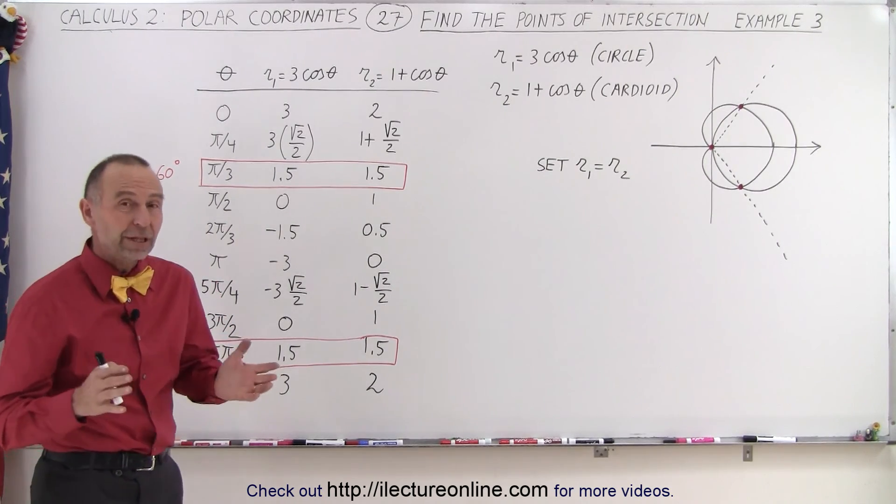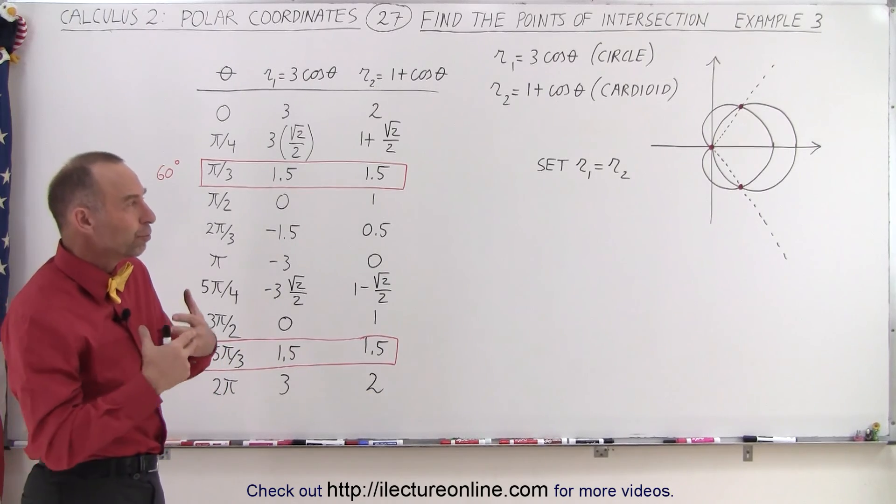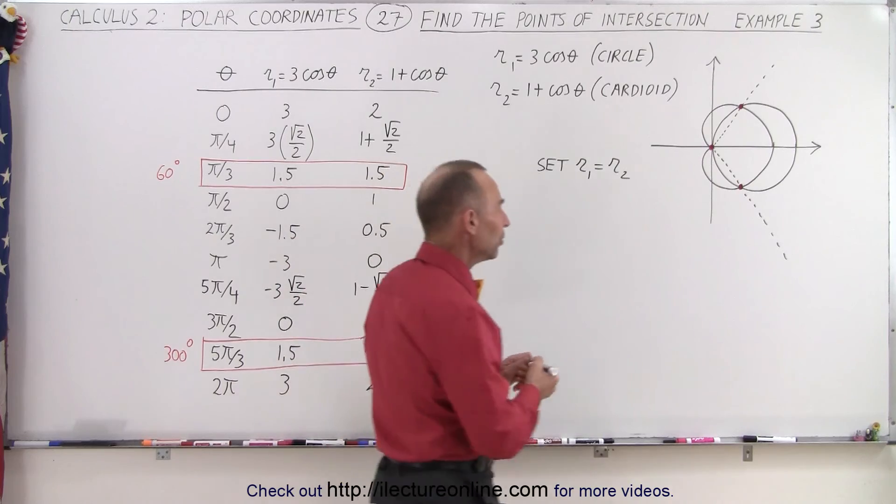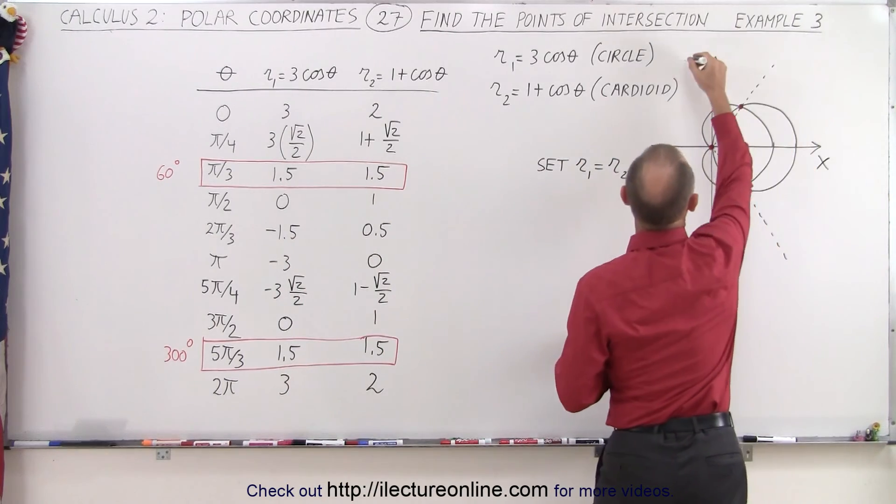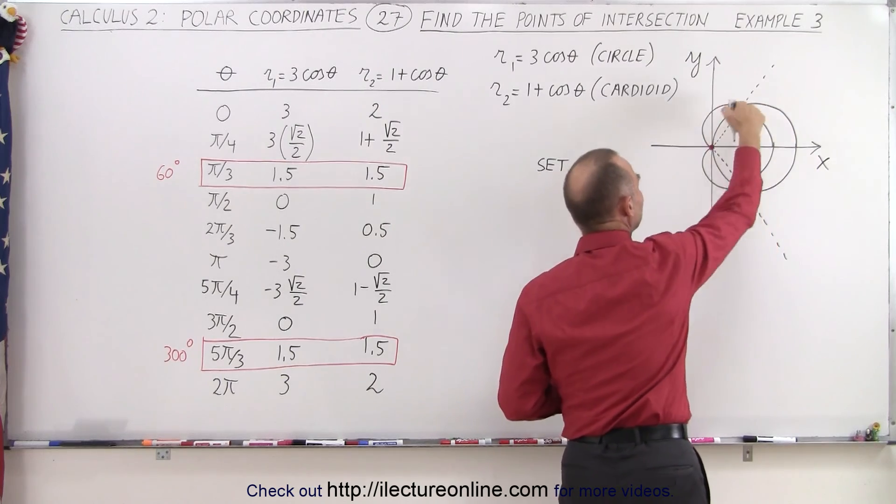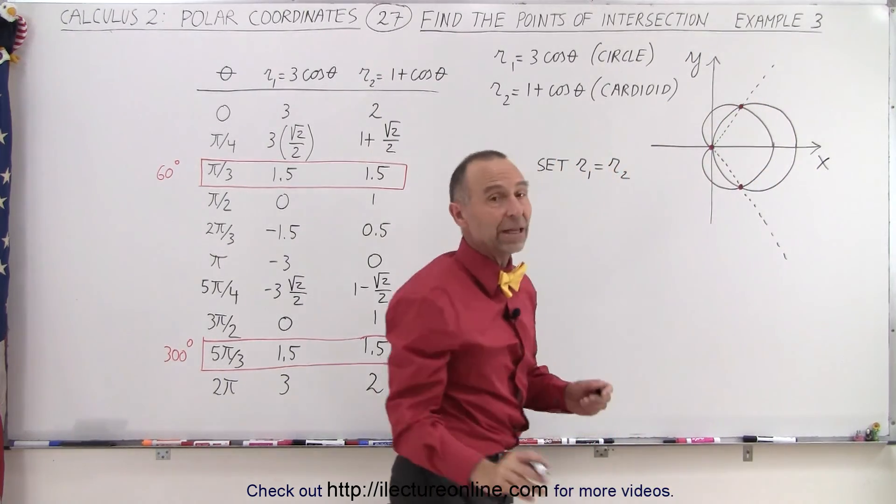Again, the best way to do this is to use multiple ways to find those points of intersection. One of them is by using the method of graphing. So here we have the x and y-axis and notice that we have the circle, the cardioid, and there's indeed three places where they intersect.